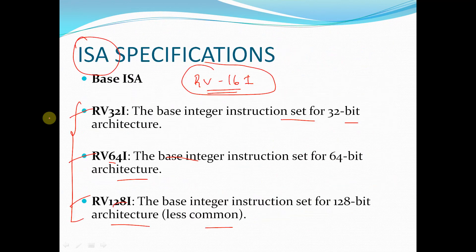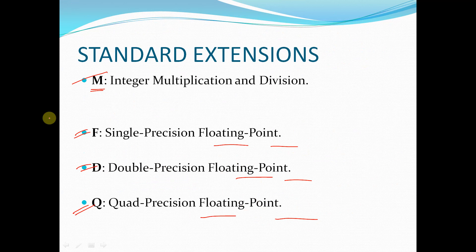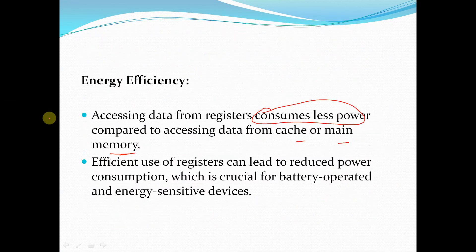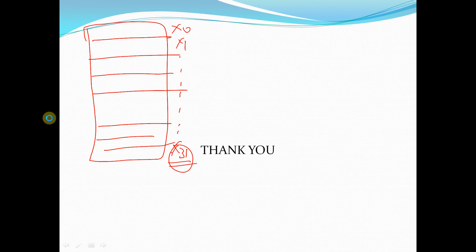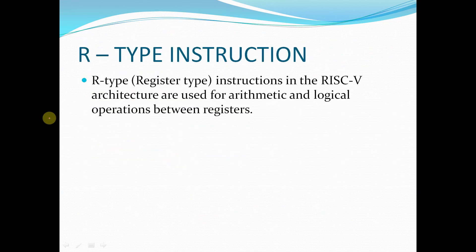In today's session we will start with the R-type instruction in RISC-V. R-type instructions in the RISC-V architecture are used for arithmetic and logical operations between registers — that is, operations are performed between register values.